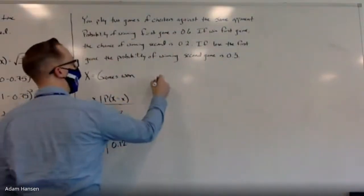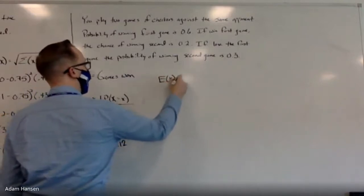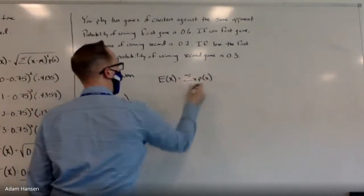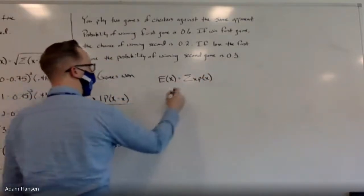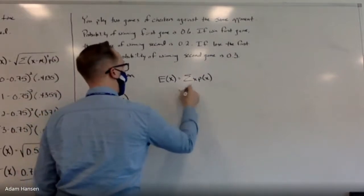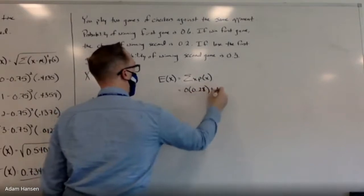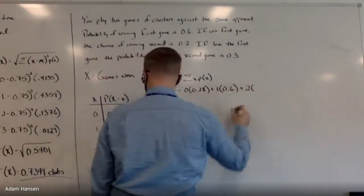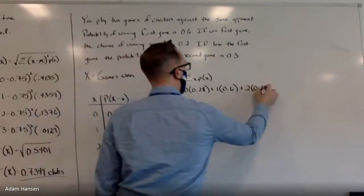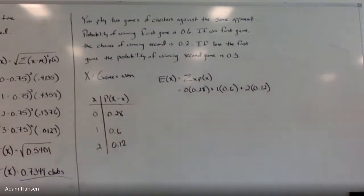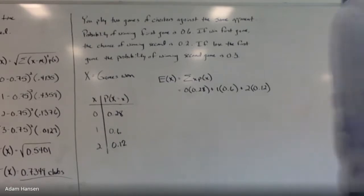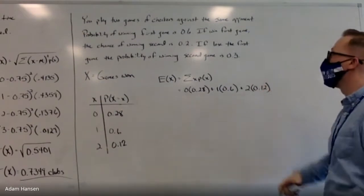The expected number of games won is: 0 × 0.28 + 1 × 0.60 + 2 × 0.12 = 0 + 0.60 + 0.24 = 0.84. I should expect to win about 0.84 games every time I play two games against this opponent.